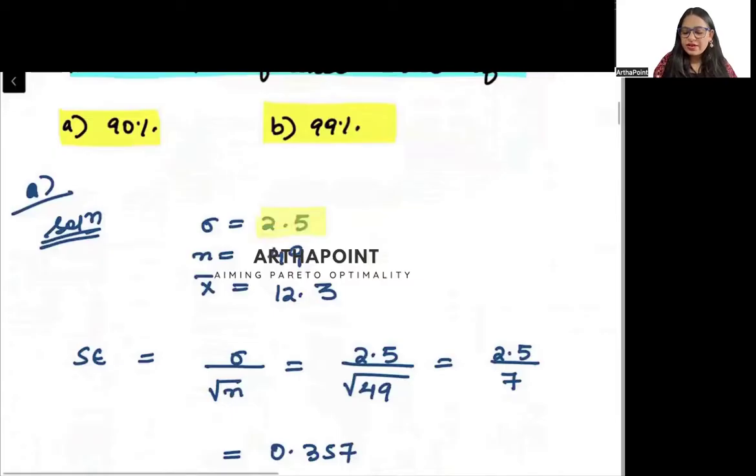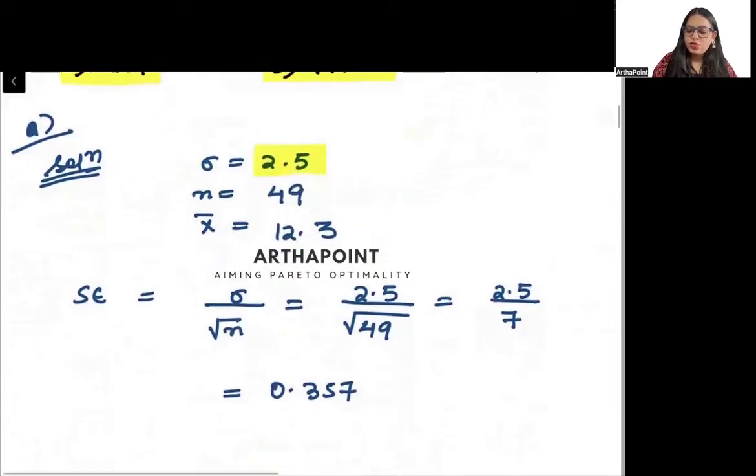So you're given that standard deviation is 2.5, the size of the sample is 49, and the mean is 12.3.